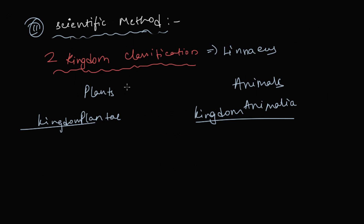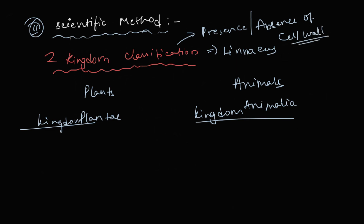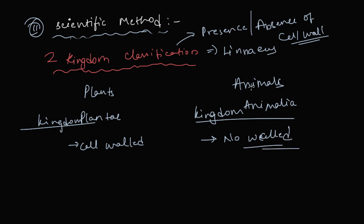This two-kingdom classification was based upon the presence or absence of a cell wall. Organisms with a cell wall were classified into Kingdom Plantae, and those without a cell wall were placed into Kingdom Animalia. No other characteristics such as eukaryote or prokaryote status were considered by Linnaeus.